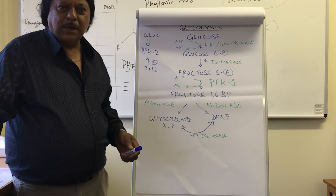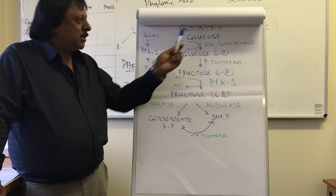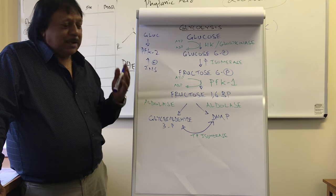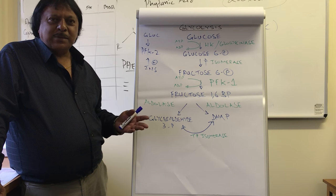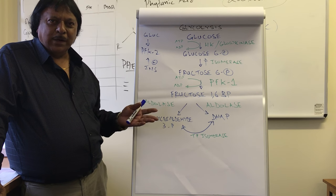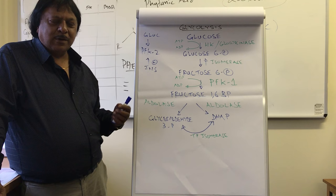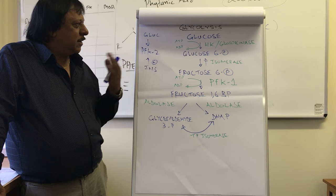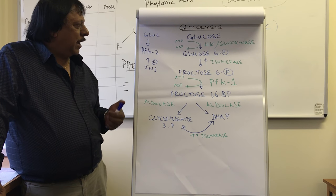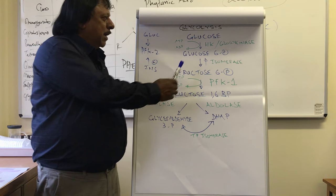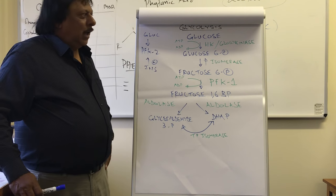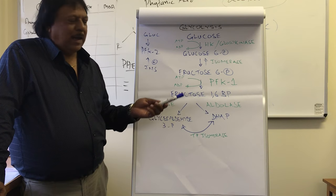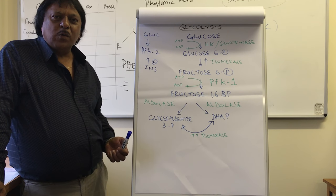Glycolysis is the metabolism of glucose — the breaking down of glucose to extract energy. Something important to remember is that plants make carbohydrates from carbon dioxide and water, and we as humans consume those carbohydrates and breathe them out as carbon dioxide and water. So there is a very delicate interplay between humans and plants. Once glucose is in the bloodstream, it enters the cell and is converted to glucose 6-phosphate by an enzyme known as hexokinase or glucokinase.